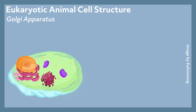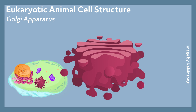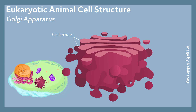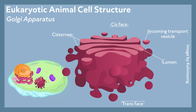Golgi apparatus. The Golgi apparatus is a cytoplasmic organelle made up of cisternae, and the pockets within the cisternae are referred to as the lumen. The Golgi apparatus sits in the rough ER and has two faces: the cis face and the trans face. The cis face is the receiving side, closest to the rough ER, and receives vesicles from the rough ER. The trans face is the secreting side and secretes those vesicles.